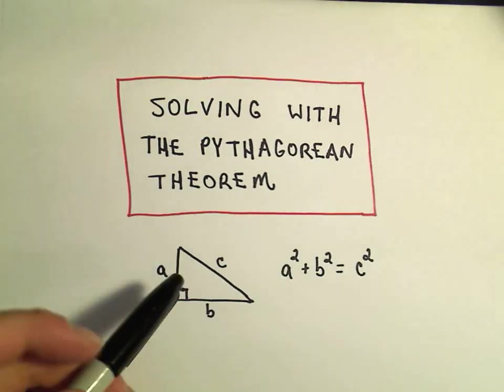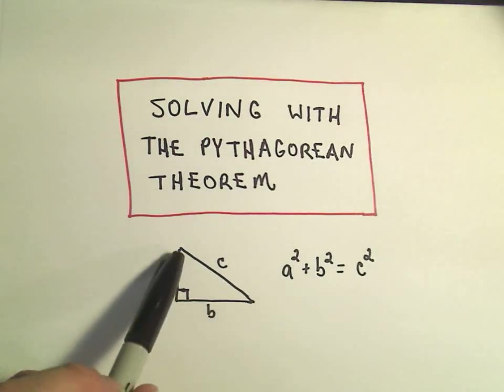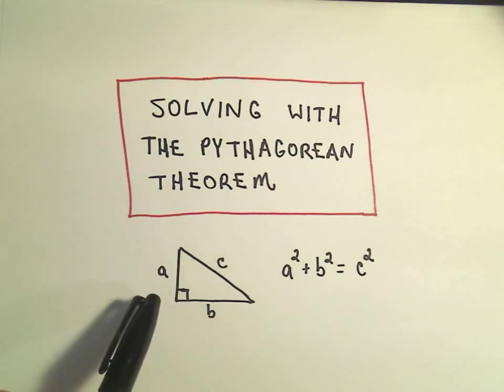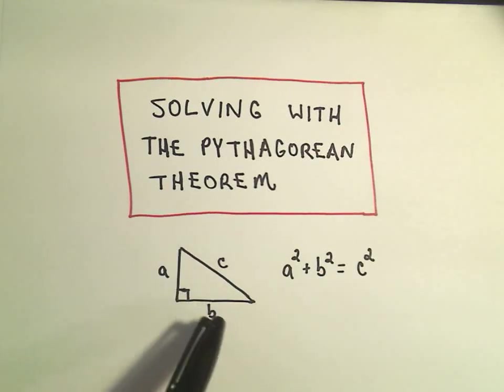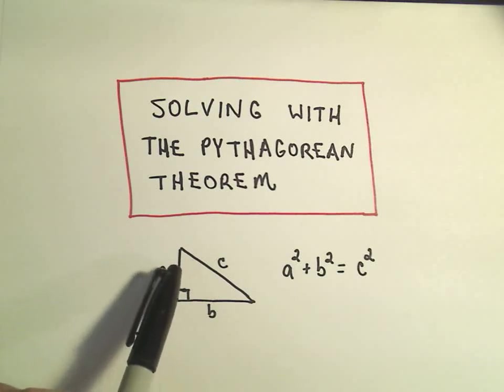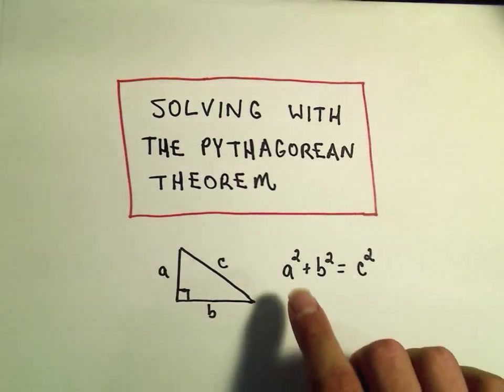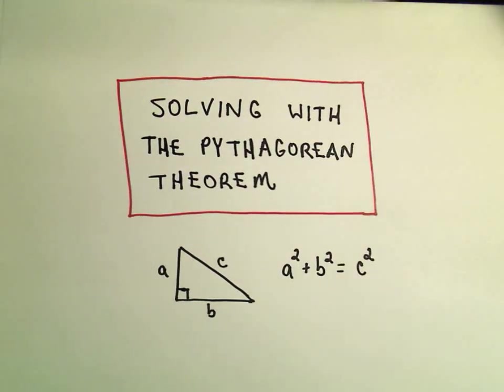So the Pythagorean Theorem says if you have a right triangle, if you take the legs, that is the two shorter sides, if we call those a and b and the hypotenuse c, it says that these sides will always satisfy the equation a squared plus b squared equals c squared. Certainly one of the most used little theorems in all of mathematics. It's great stuff.